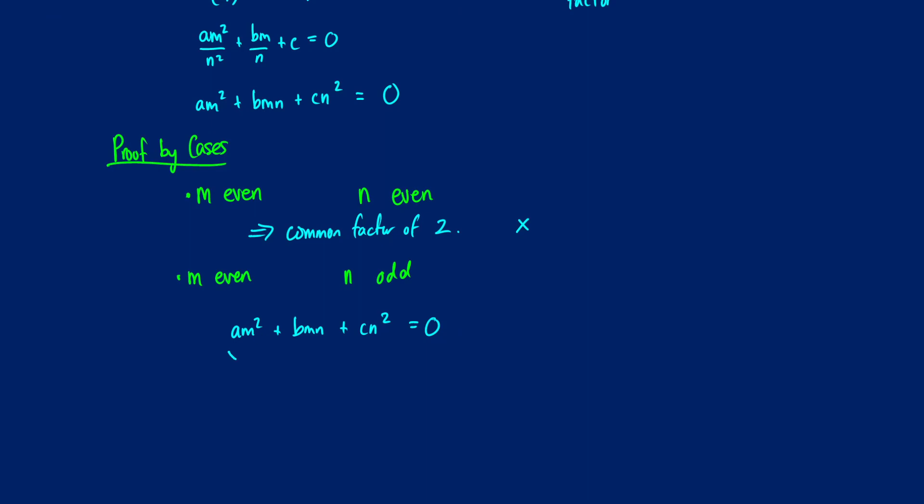Well, first thing is that this bit right here, am squared plus bmn is going to be even because m is even. So we can extract an even term from both of those. But n is odd, so c times n squared is also going to give us an odd number back.